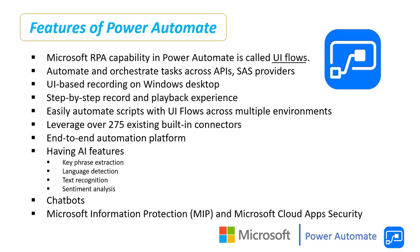Microsoft Power Automate has AI features such as key phrase extraction, language detection, text recognition, and sentiment analysis. Key phrase extraction identifies the main talking points from your text. Language detection identifies the predominant language from your text. Text recognition extracts embedded printed and handwritten text from images into machine-readable characters.